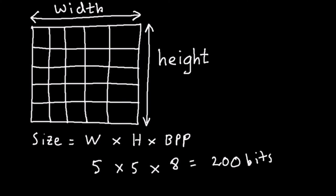We can also present the size of our image in bytes, which also makes sense. So we can divide 200 by 8, which will give us 25 bytes as being the size of our image.